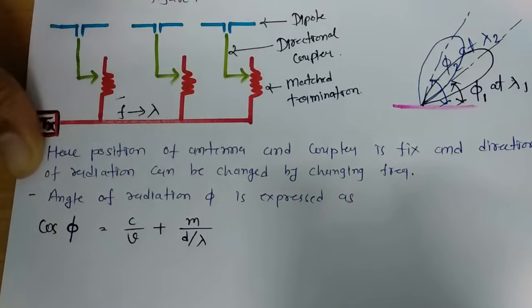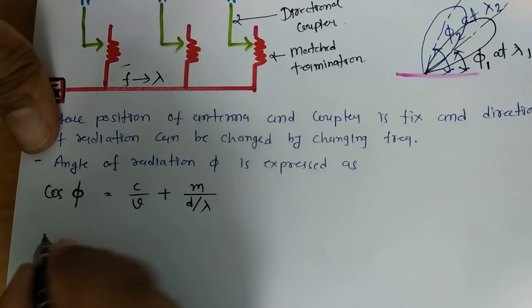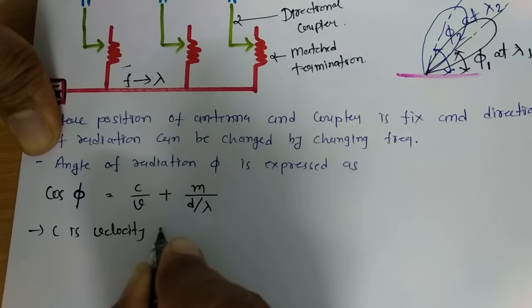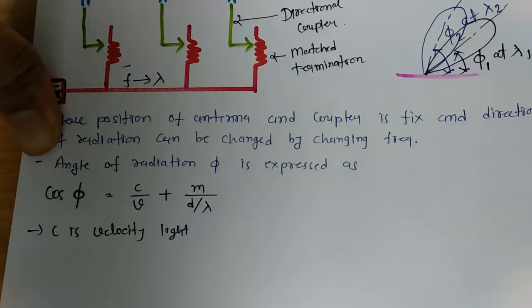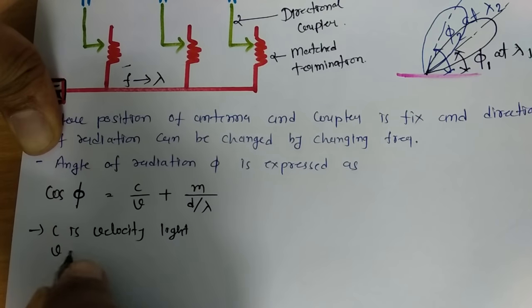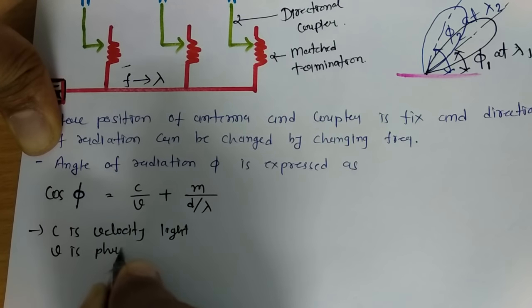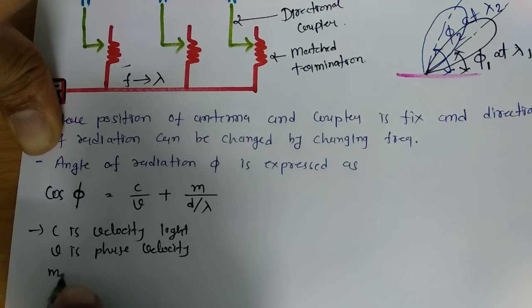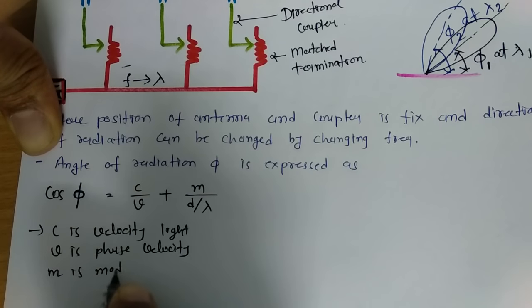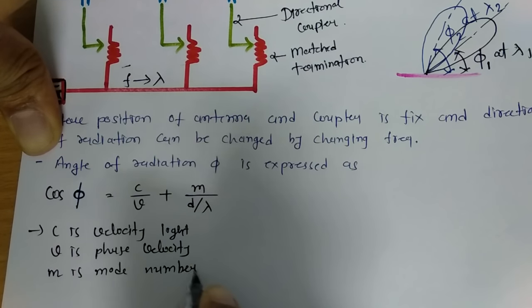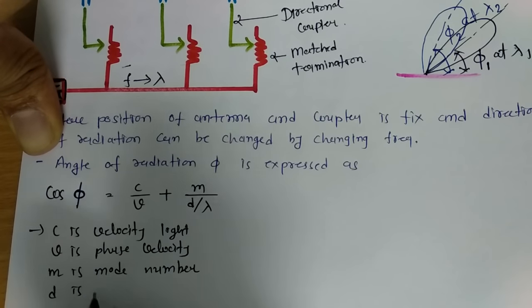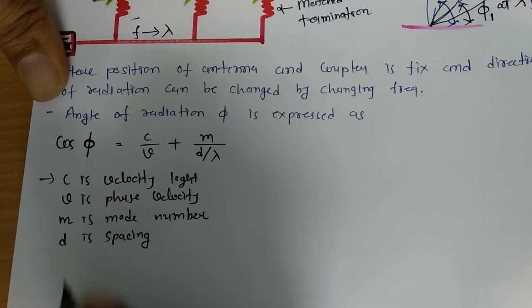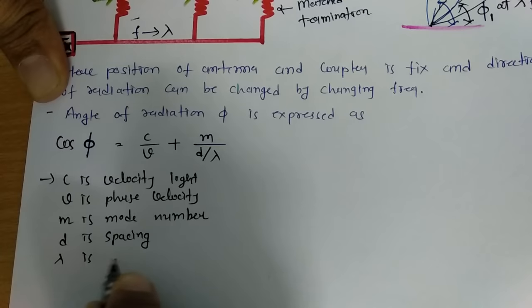Where C is velocity of light, V is phase velocity, M is mode number, D is spacing between elements, and lambda is wavelength.